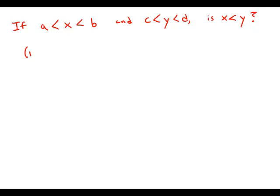Statement number one tells us that A is less than C. This would tell us that X is bigger than A, and A is bigger than C, and Y is bigger than that. So both of them are bigger than A, but that doesn't necessarily tell us how they compare.